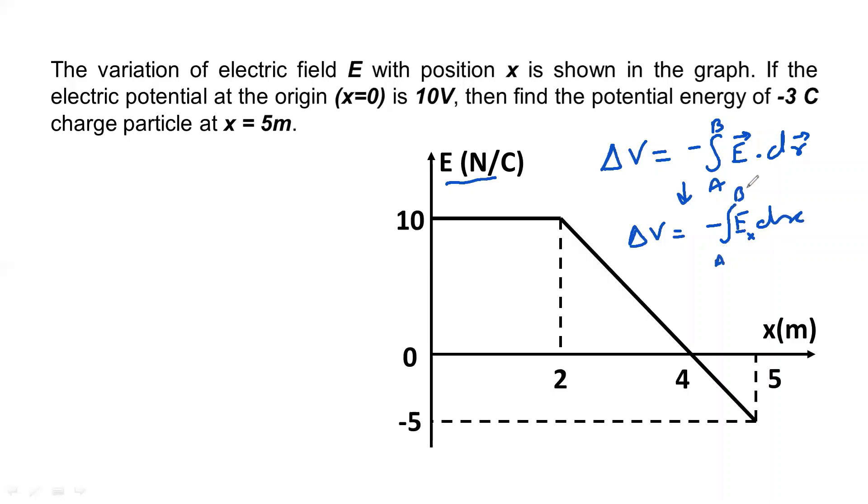Now we see here the potential V, and here is how much it is, 10 volts. Now if you look at this term, this particular term, that is area. This is the area of the graph.